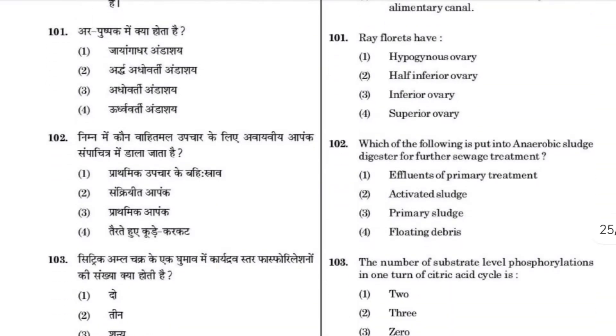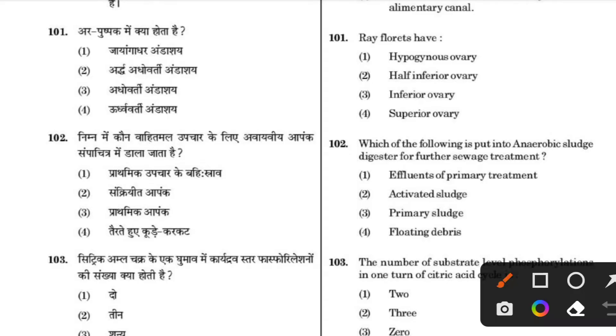Which of the following is put into an anaerobic sludge digester for further sewage treatment? The answer is activated sludge.